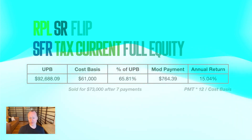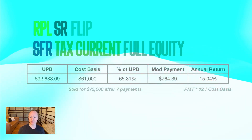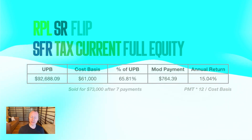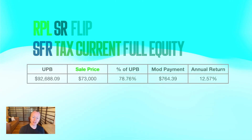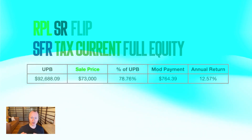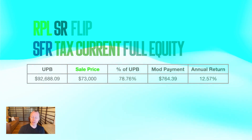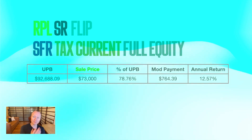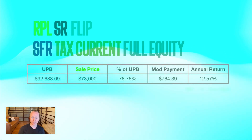Our annual return was simply calculated as payment times 12 divided by cost basis. We sold it in seven months for $73,000. From the buyer's side, they bought it for $73,000, which was 78% of the principal amount. At that $764 per month, they're earning 12.57%. This is the arbitrage opportunity — we bought it for 15%, we sold it for around 12.5%, earning the spread. We bought for $61,000 and sold for $73,000, not to mention the payments we collected in those seven months.